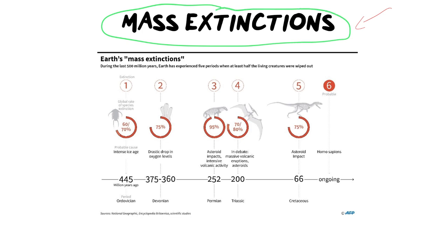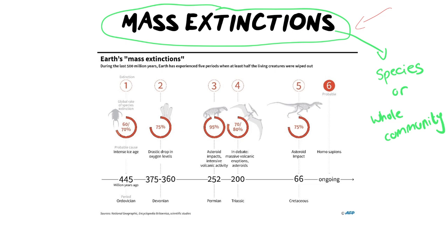As the name suggests, mass extinctions are when a species or a whole group of species die out, and we're actually going to divide that into two different kinds of extinctions. When we speak about extinctions, it can be a species that is going extinct, or it can be a whole community, or even a whole ecosystem. Basically, mass extinctions require a certain percentage of individuals to go extinct in order to be considered mass.